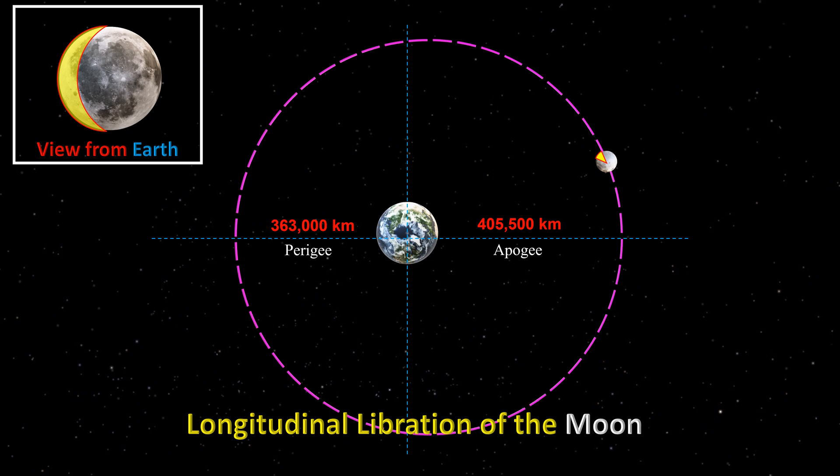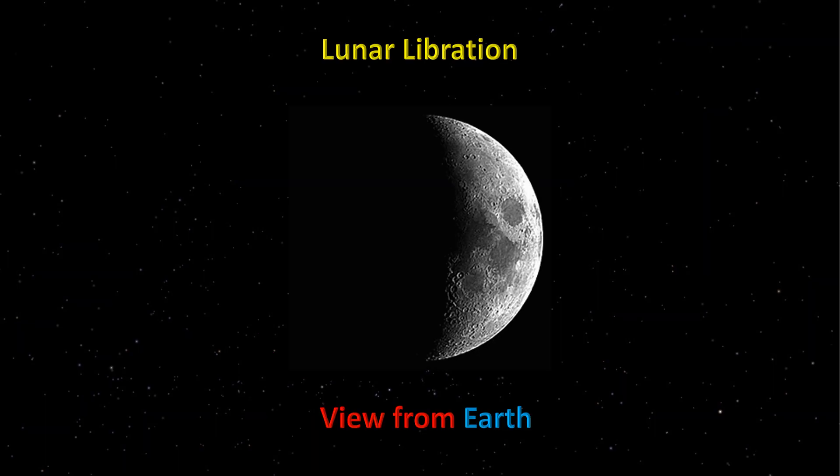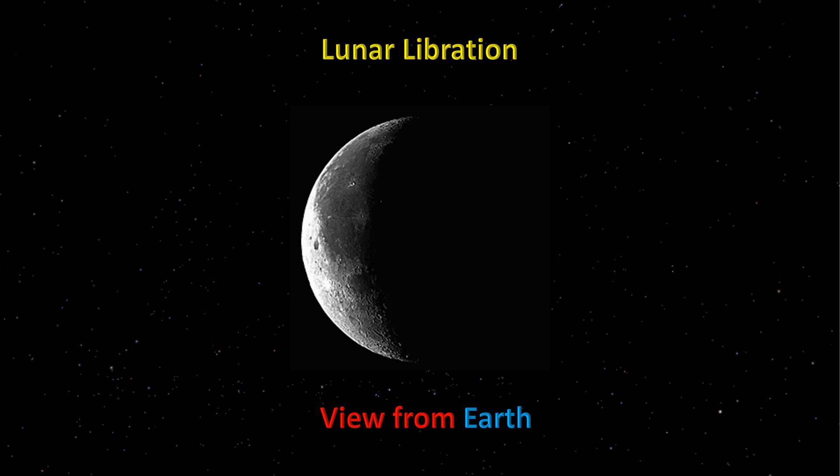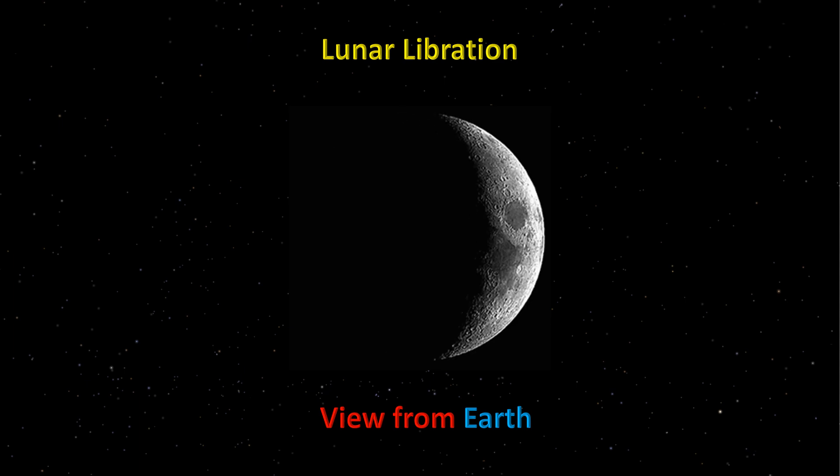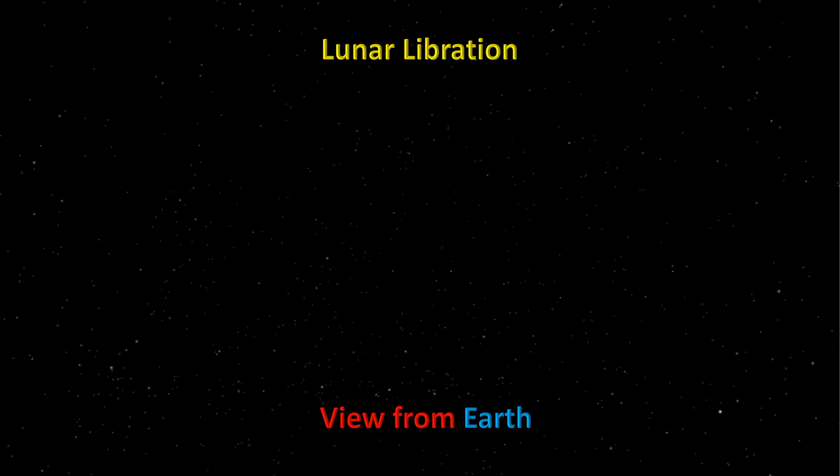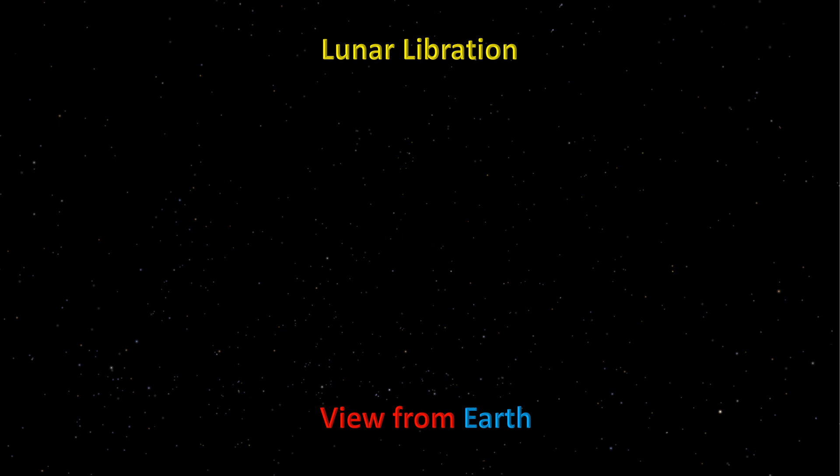Though from the Earth we can see only one side of the moon called the near side, over time it is possible to see as much as 59% of the moon's surface due to a combination of these motions—in particular, the slight north-south rocking and east-west wobbling of the moon known as lunar libration.